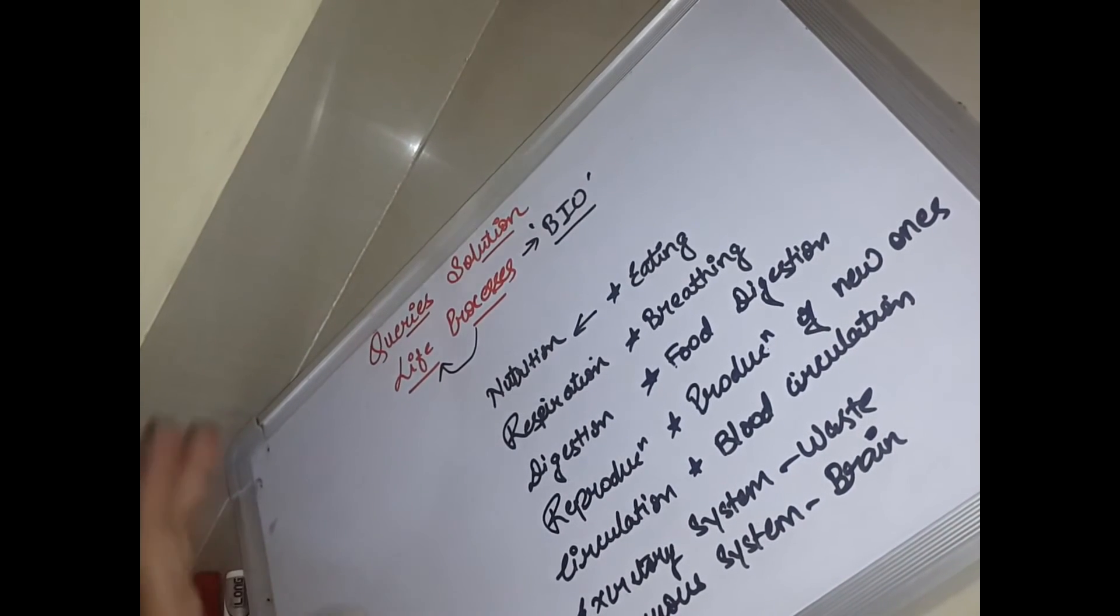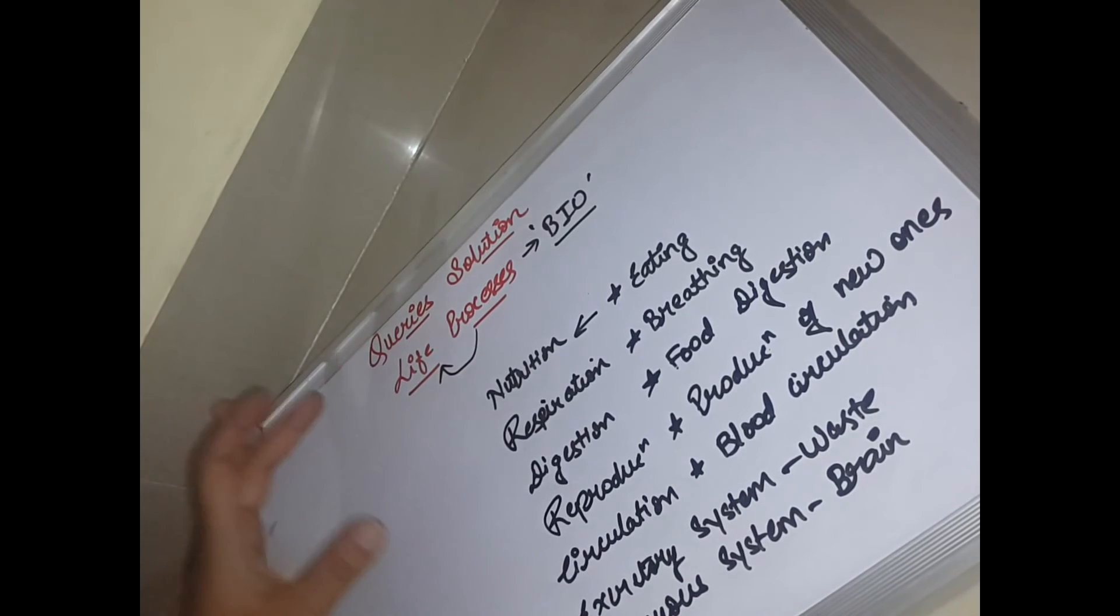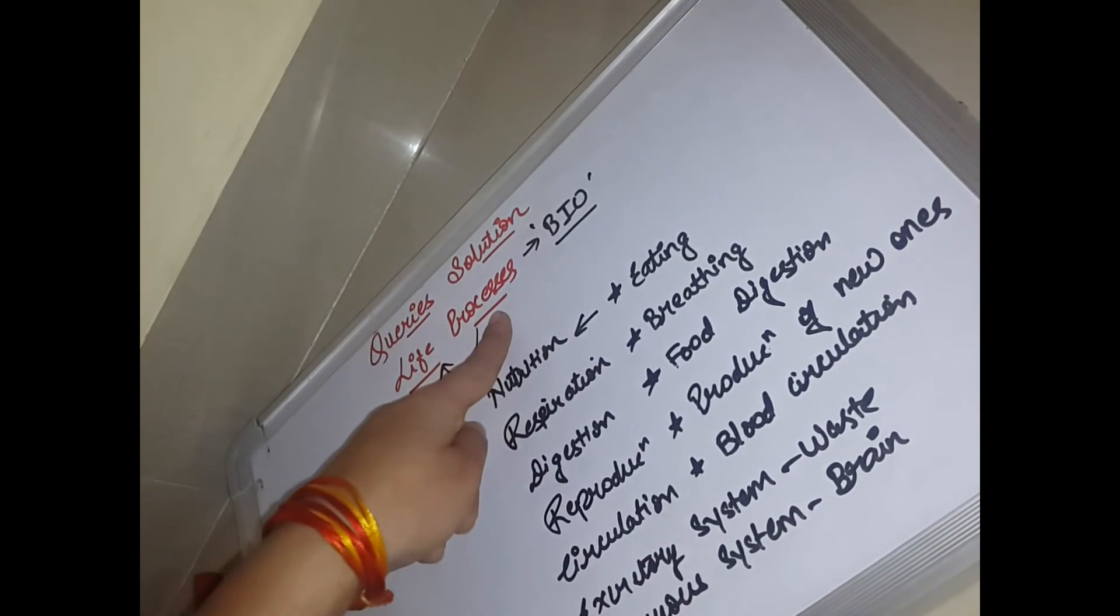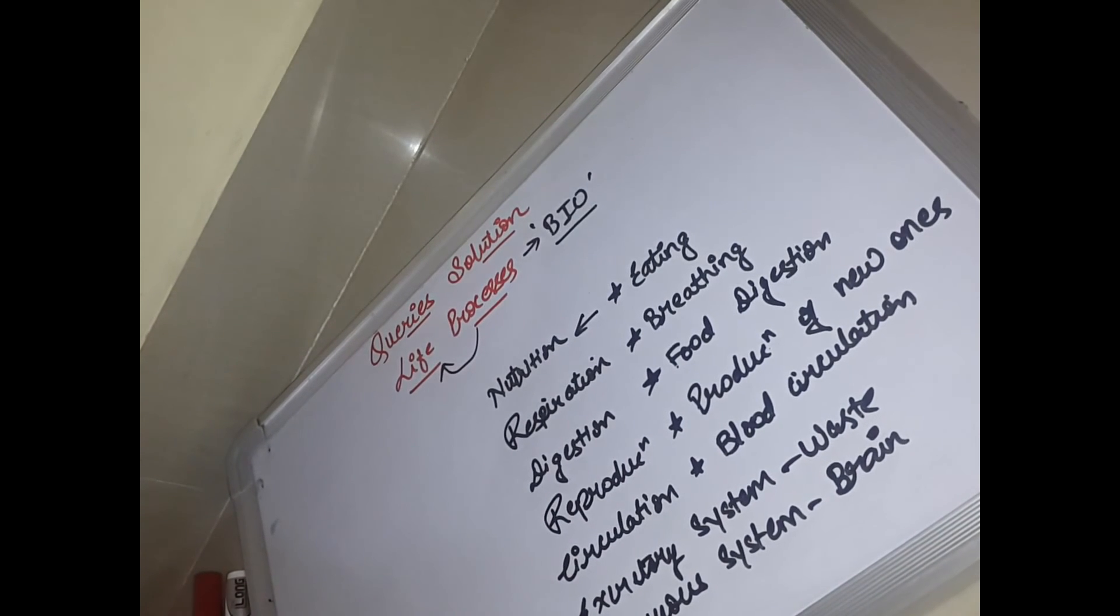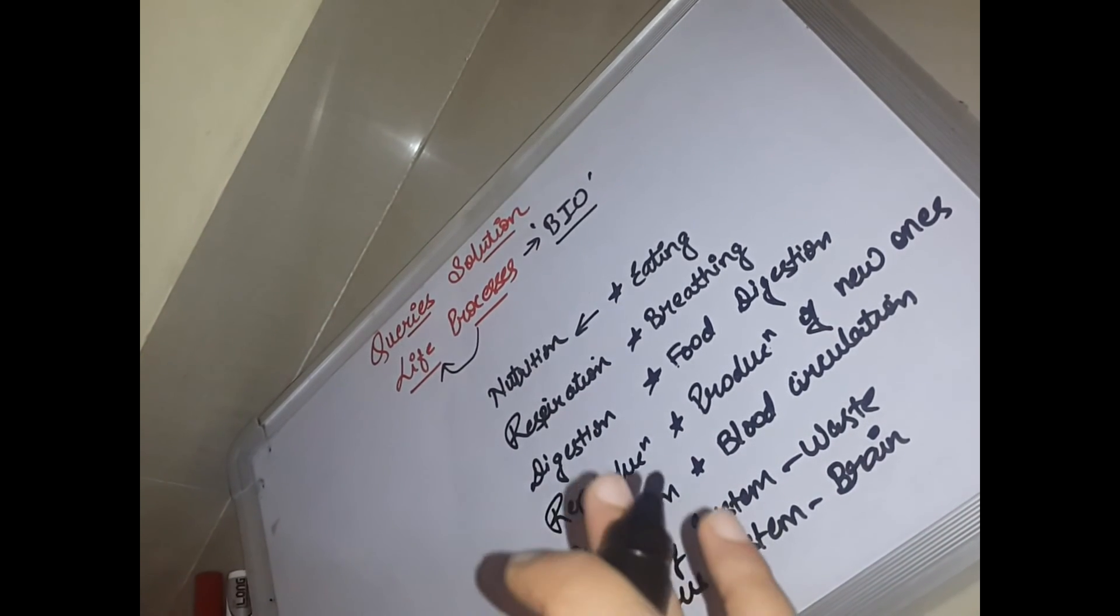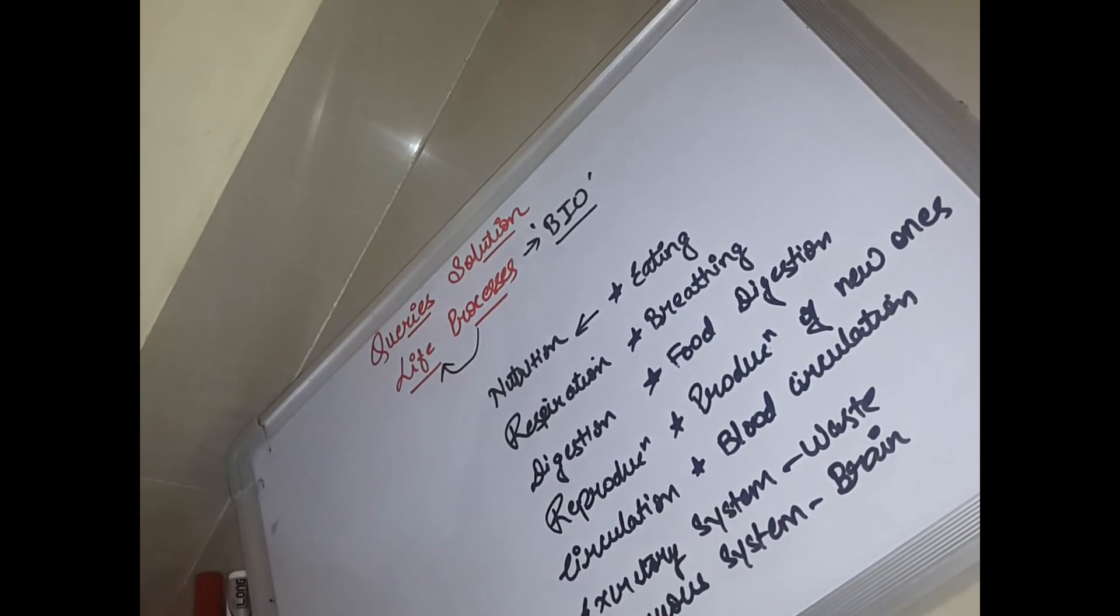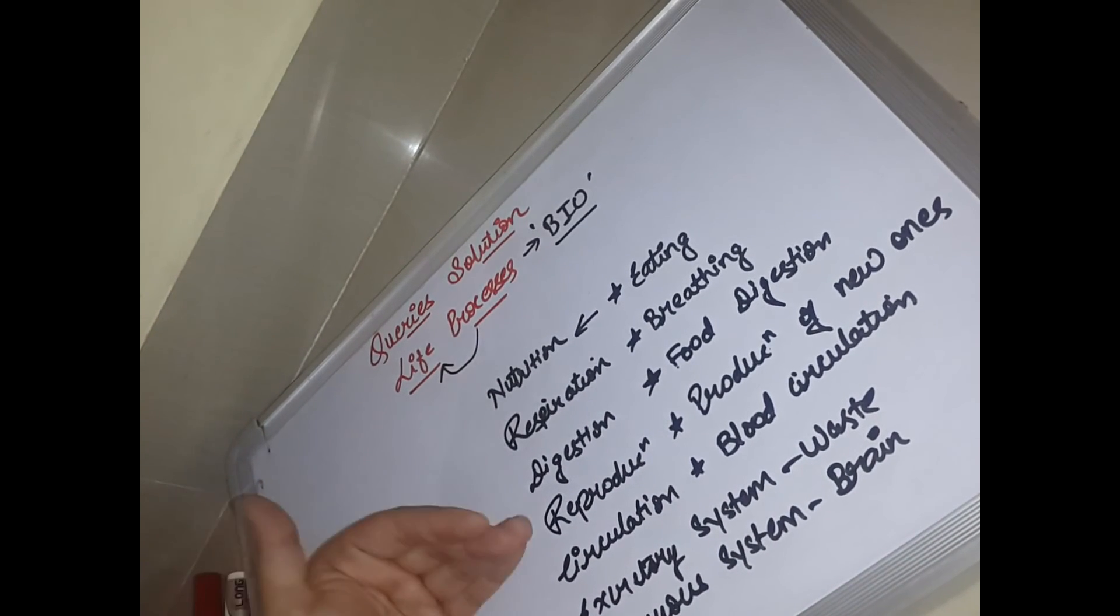So actually now what is life process? I'll summarize you up quickly. What do you mean by life process? These are processes which in our life are very important. Which processes? Some examples like nutrition is very necessary, respiration is necessary, digestion is necessary, reproduction is necessary and so on. So summarizing up the topic Life Processes, which is your topic, inside we have to study all these topics in detail.